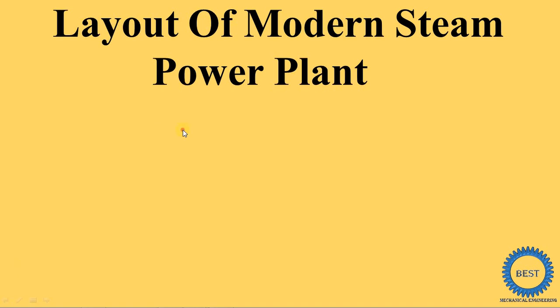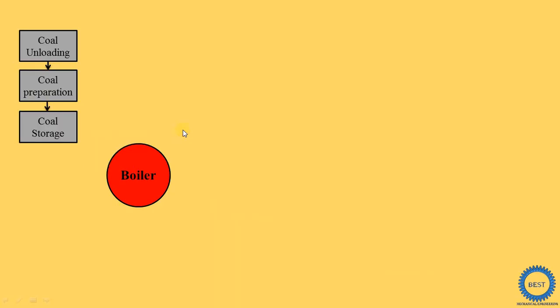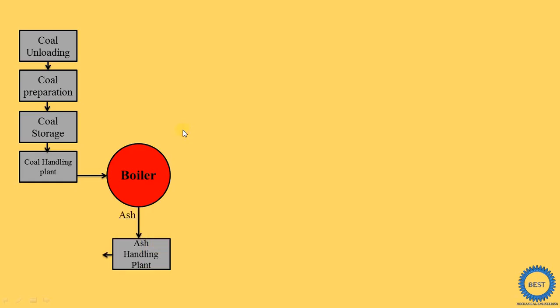In this video, I explain the layout of a modern steam power plant. In a modern steam power plant, there are a number of components. So this diagram is a little bit complicated. To make it simple, I use this animation so you will understand it easily. I definitely guarantee that you can understand this modern steam power plant very easily by watching this video.